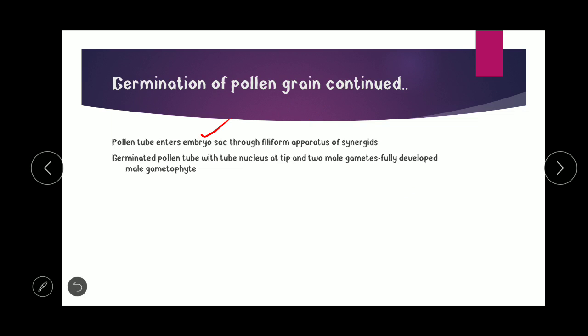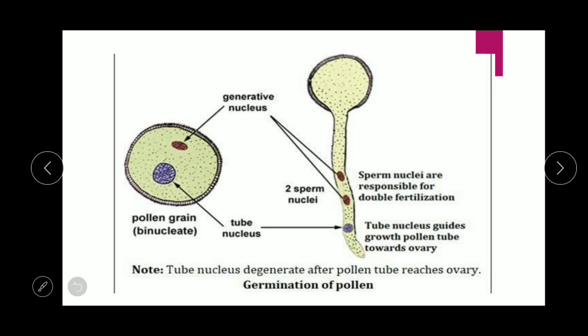The pollen tube enters the filiform apparatus of the synergid — this is an important concept. The germinated pollen tube carries the tube nucleus at its tip and two male gametes. One male gamete will fuse with the secondary nucleus (the central cell), and the other will fuse with the egg cell to form the zygote.